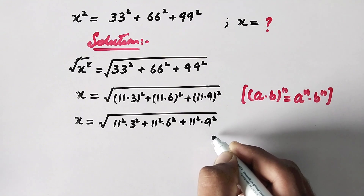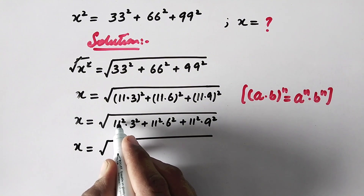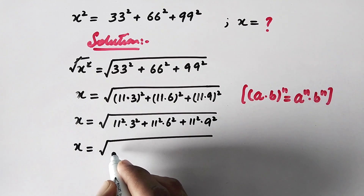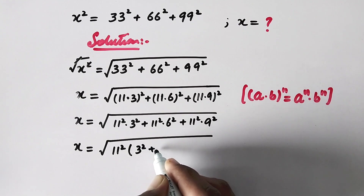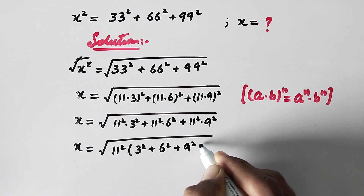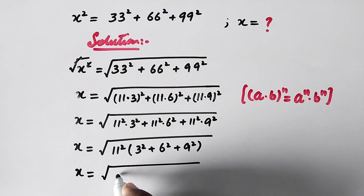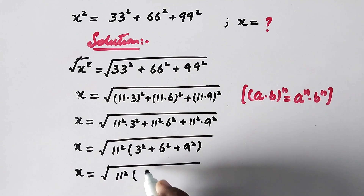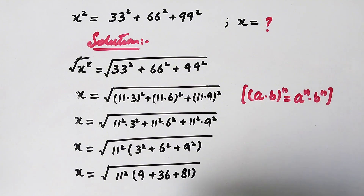In the next step, x is equal to the square root of — we can take 11 squared as a common factor from the whole expression. So it becomes 11 squared times (3 squared plus 6 squared plus 9 squared), where 3 squared is 9, 6 squared is 36, and 9 squared is 81.